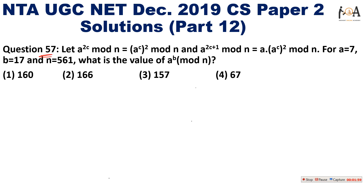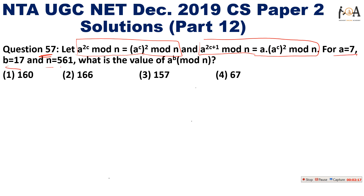Now let's solve question number 57. The question gives us: a^(2c) mod n = a^(2c+1) mod n = a · (a^c)^2 mod n, for a = 7, b = 17, and n = 561. What is the value of a^b mod n? We need to find the value of 7^17 mod 561.